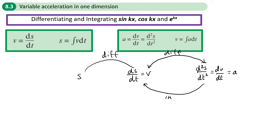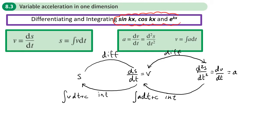Going back the other way, we integrate. When we integrate acceleration with respect to t we get velocity, and integrating velocity with respect to t gives displacement — and we introduce a plus c. This is the same as Year 1, the only difference being the functions we differentiate and integrate. In Year 2 we can now handle sine, cos, and e to the x, and we apply all of those integration techniques to variable acceleration problems.